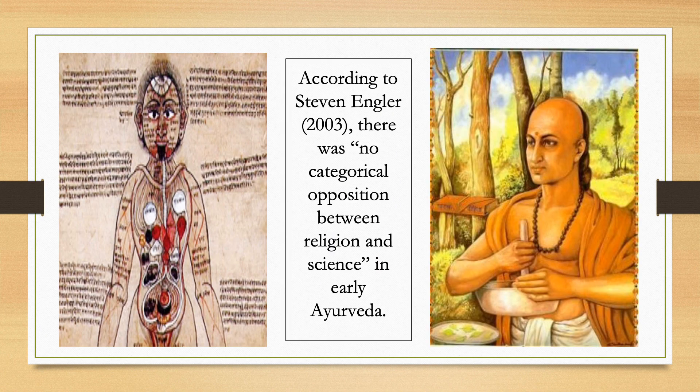Importantly, however, there are some that contest this reading of ancient Ayurvedic literature. Most notably, in a 2003 essay on this subject, Stephen Engler argues that "there is no categorical opposition between religion and science in early Ayurveda." According to Engler, the modern categories of science and religion have been imposed on these texts in a way that distorts them. Later in the week, we're going to have an opportunity to talk about Engler's essay and to also examine some Ayurvedic literature for ourselves.